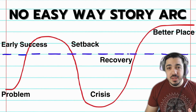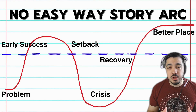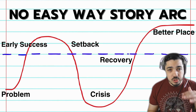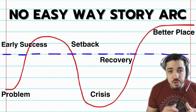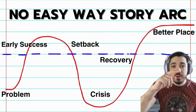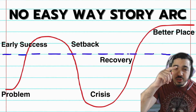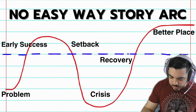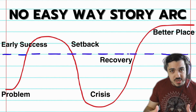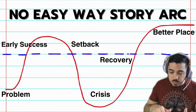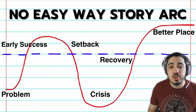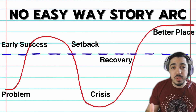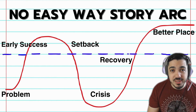For the No Easy Way Story Plot Arc, you're always going to start, as the graph shows here, really low. Then you're going to go up to a certain height — not at the highest yet. And then you're going to drop completely down, which is the Crisis part. Once you hit the Crisis, you shoot back up because the character ends up in a better place than when they first started the story.